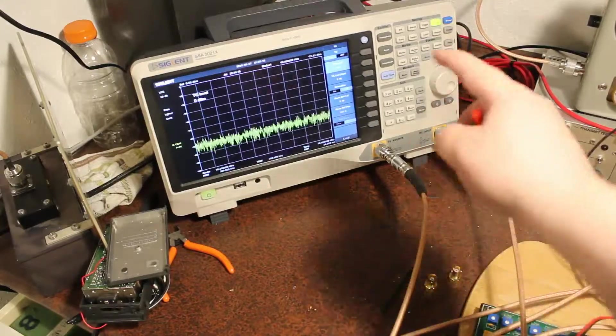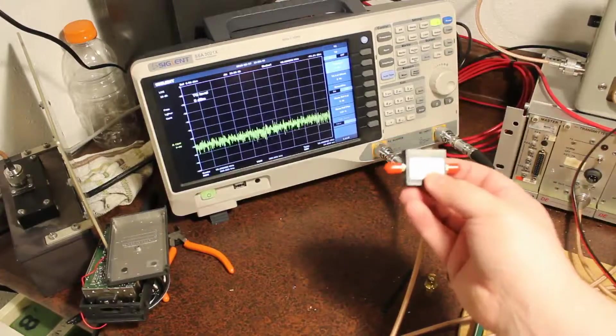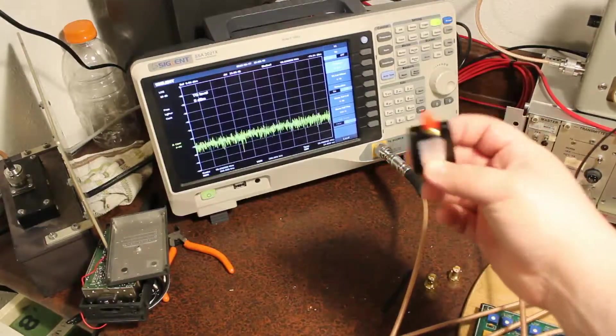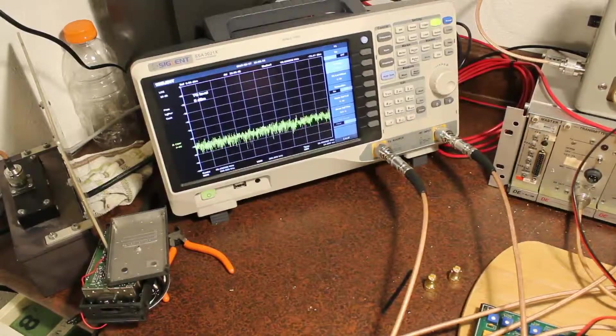So what I'm going to do is generate a signal with the tracking generator from the spectrum analyzer, put it through the filter, and see what comes out the other side. What kind of return loss do I get, and what kind of filter characteristics do I get.